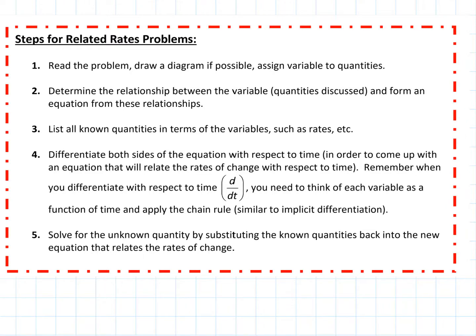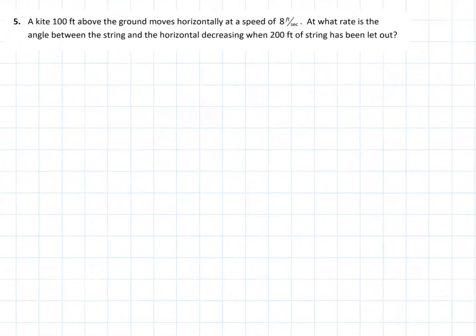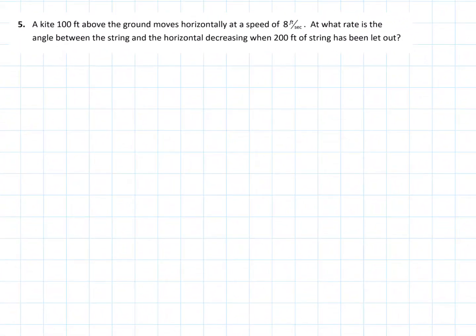Let's do another related rates problem. I have listed out the steps for doing related rates. Let's go ahead and work through these steps, starting off by reading the problem, drawing a picture or diagram if we can, and then determining the relationship between the variables. We normally have more than one variable. Variables are the quantities discussed, and then we form an equation from those relationships.